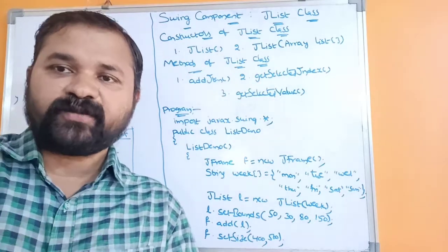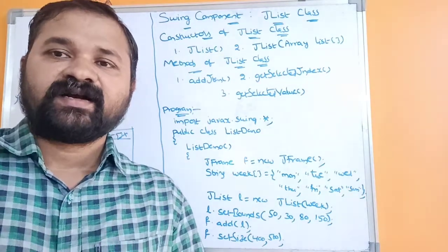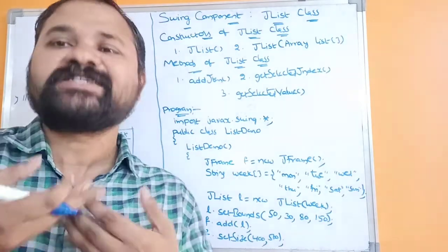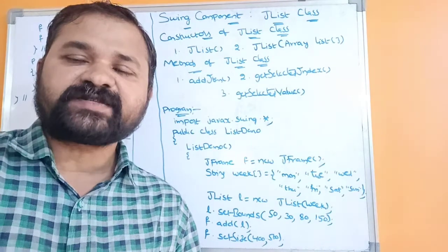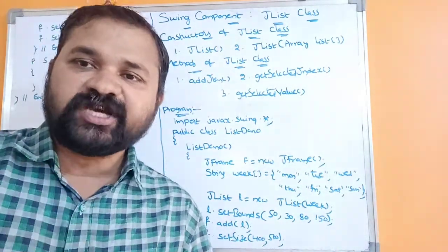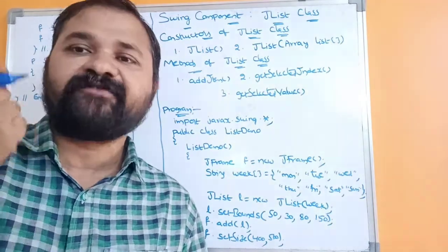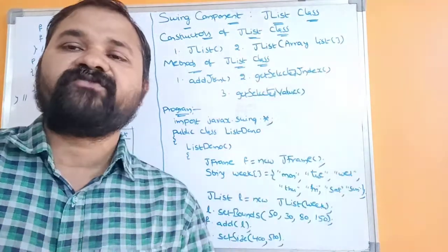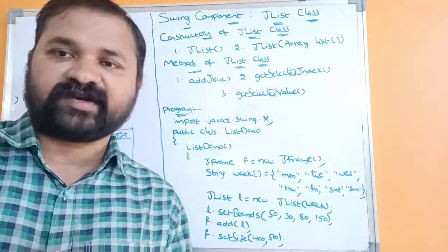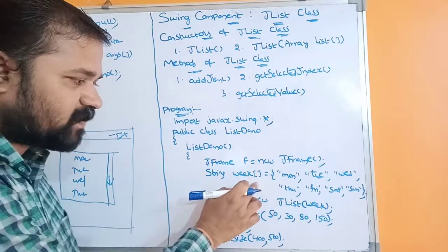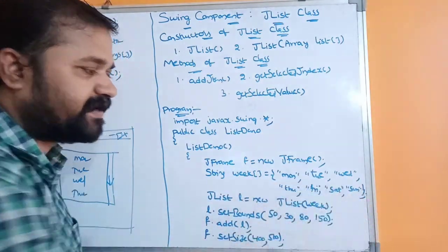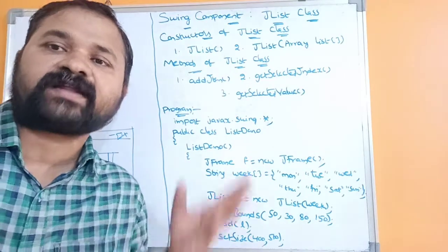Now let's see about the Swing component JList class. JList is mainly useful in order to create a list of items. The major difference between JComboBox and JList is that from JComboBox we can select only one item, whereas from JList we can select one or multiple items. For example, we can have Monday, Tuesday, Wednesday, Thursday, Friday, Saturday, Sunday — seven items in the list.